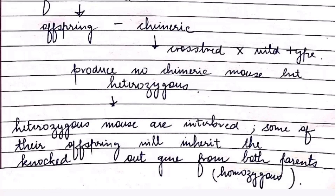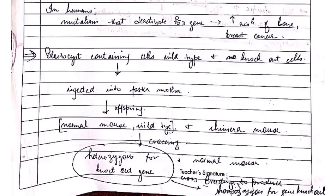Some of their offspring will inherit the knocked-out gene from both parents, making them homozygous. To revise: we start with a wild-type blastocyst injected into a foster mother, producing chimeric offspring with normal and wild-type cells. After crossing, we get heterozygous mice, which are again crossbred to produce homozygous mice. This is the mechanism for gene knockout.